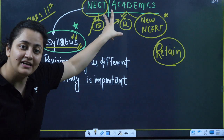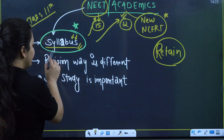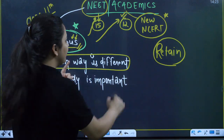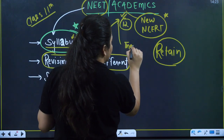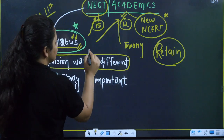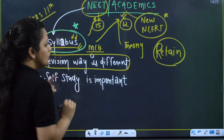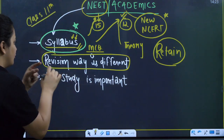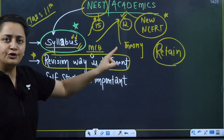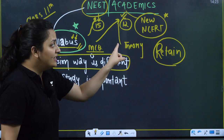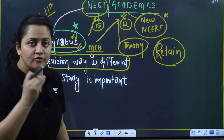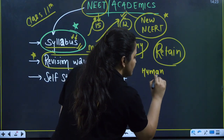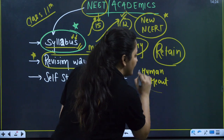The revision approach is different for both exams. For academics you need to write a theory paper, and for NEET you need to attempt MCQs. So while revising any chapter, you need to practice questions and MCQs. For example, take the topic 'Human Heart' — once you have completed it in lectures and revised from your books, practice MCQs based on it.